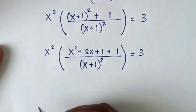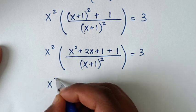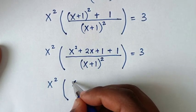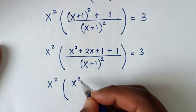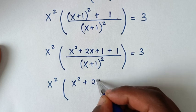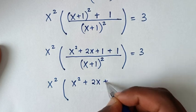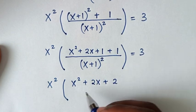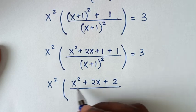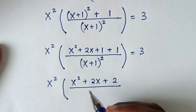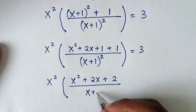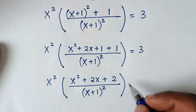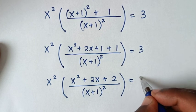In the next step it will be x² plus 2x, then 1 + 1 = 2, so it becomes x²[x² + 2x + 2 over (x+1)²] = 3.